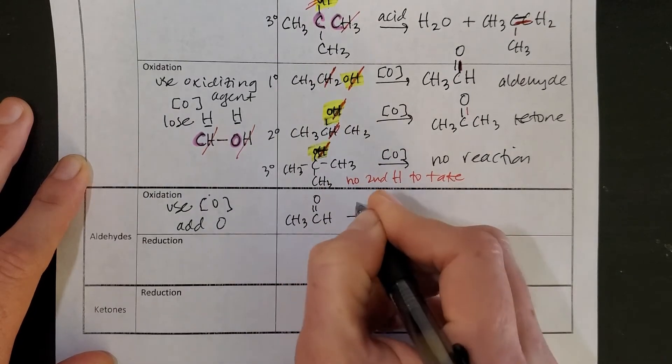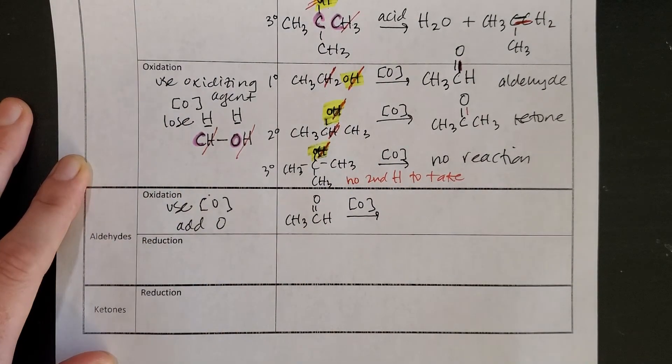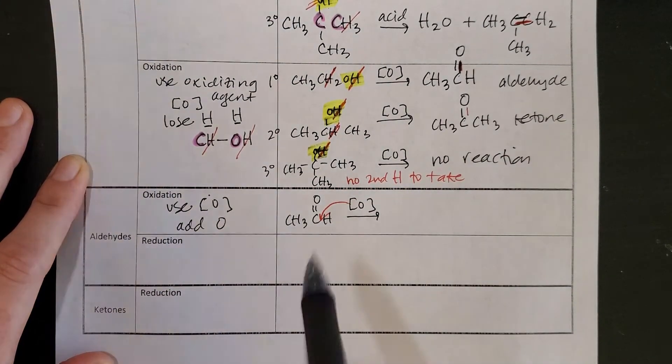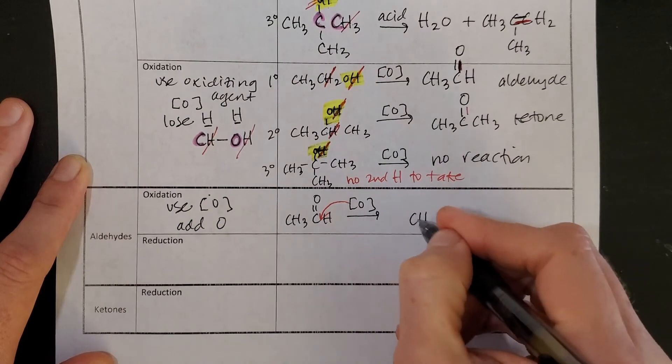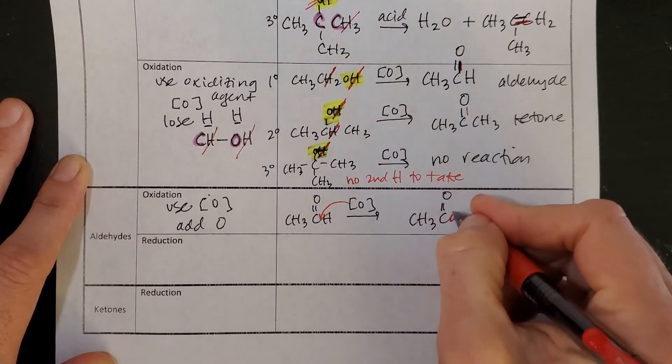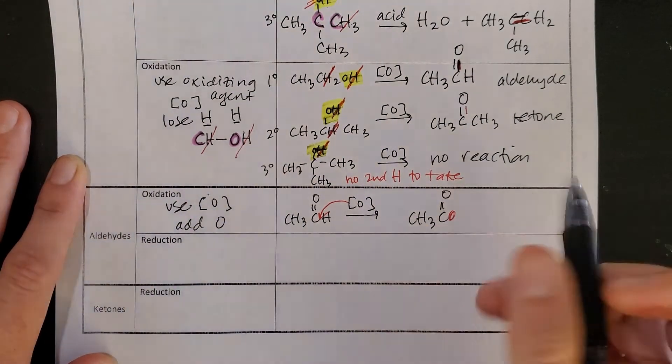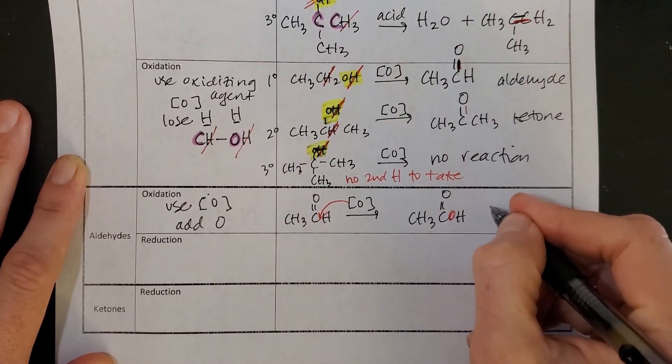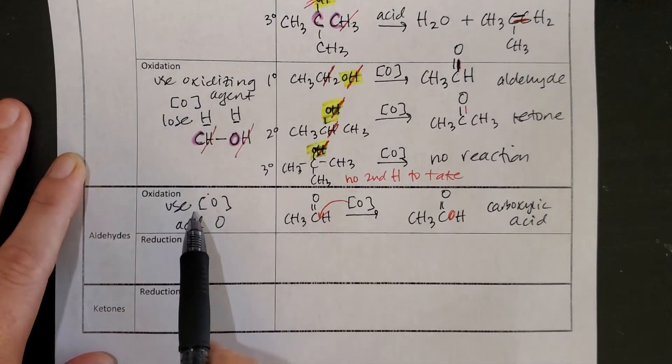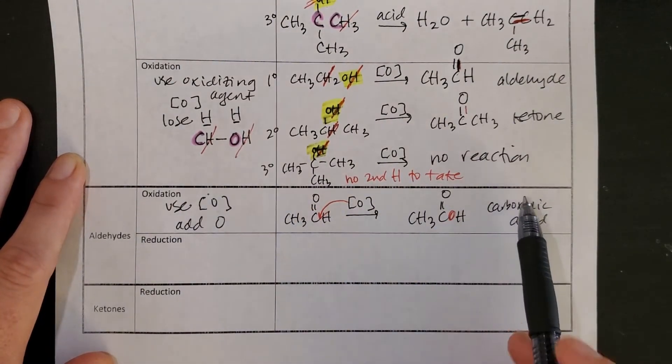That oxidizing agent supplies oxygens that I'm going to add right here next to the carbonyl. And so I end up with the same atoms, a new oxygen, and that same hydrogen there. I now have a carboxylic acid. So when you oxidize aldehydes, you get a carboxylic acid.